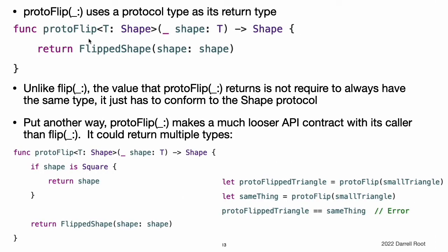For example, here is a version of Flip that uses a protocol type as its return type instead of an opaque return type. This version of ProtoFlip has the same body as Flip, and it always returns a value of the same type. Unlike Flip, the value that ProtoFlip returns is not required to always have the same type — it just has to conform to the shape protocol. ProtoFlip makes a much looser API contract with its caller than Flip makes. It reserves the flexibility to return values of multiple types. The revised version of the code returns an instance of Square or an instance of FlippedShape depending on what shape is passed in. Two flipped shapes returned by this function might have completely different types.